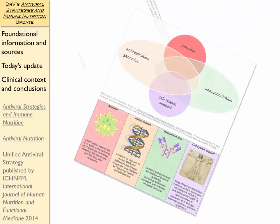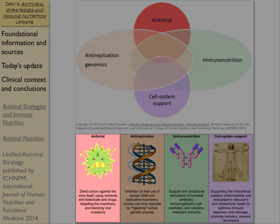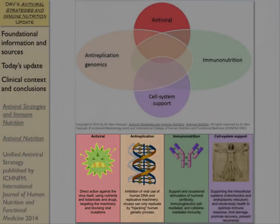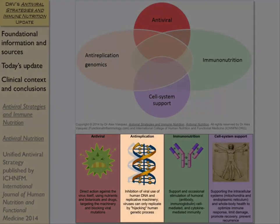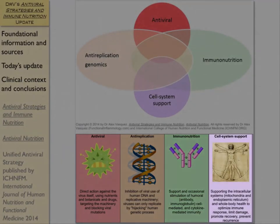Graphically, that's represented by these two images from my book — Antiviral Strategies, also Antiviral Nutrition. We want to address the viral component, we want to address the replication of that virus, we want to address immunonutrition, and we want to support cellular and systemic health as well.